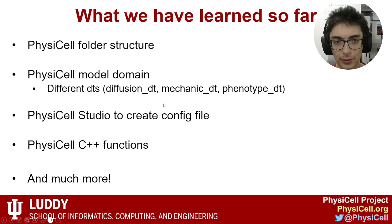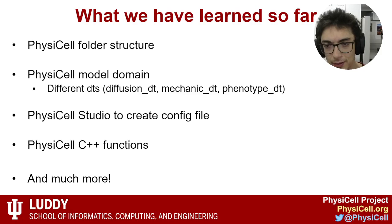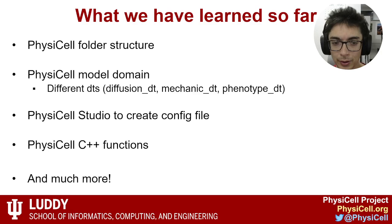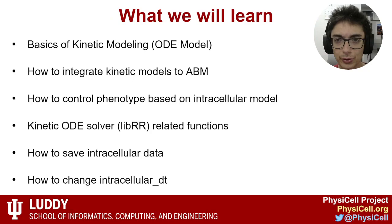So what have we learned so far? We know the PhysiCell folder structure, we know the PhysiCell domain with different DTs — diffusion DT, mechanic DT, and phenotype DT — and we know PhysiCell Studio, which enables use of the configuration file. In the advanced sessions 1 and 2 we have seen C++ functions and more.